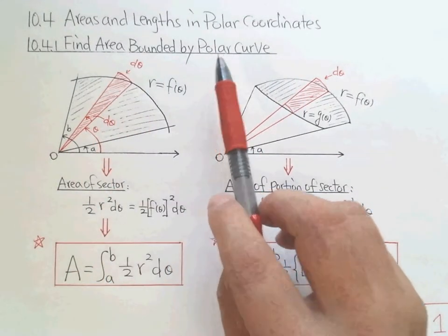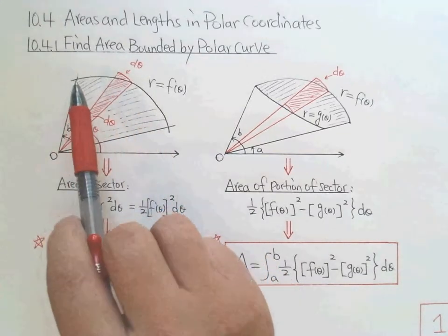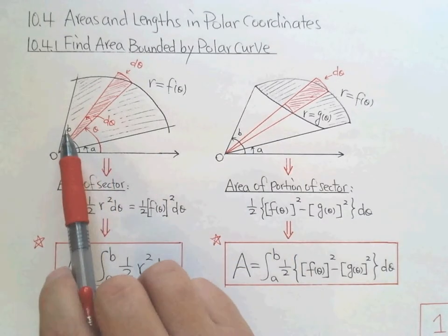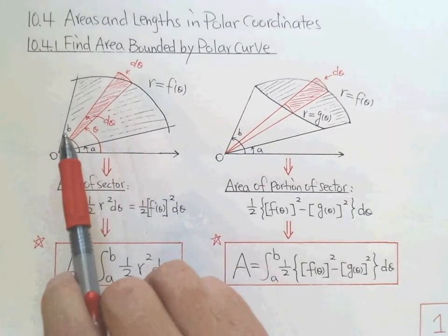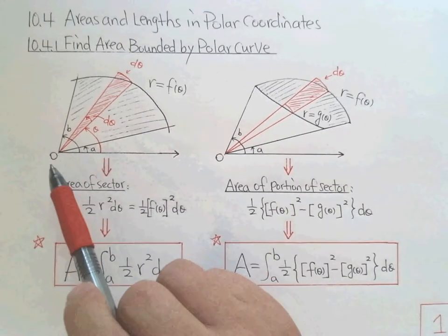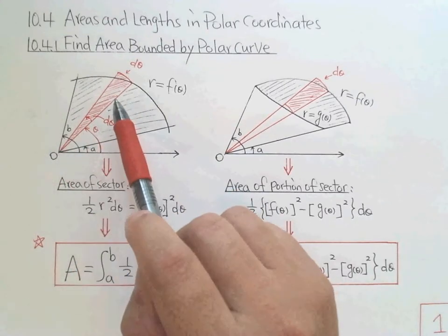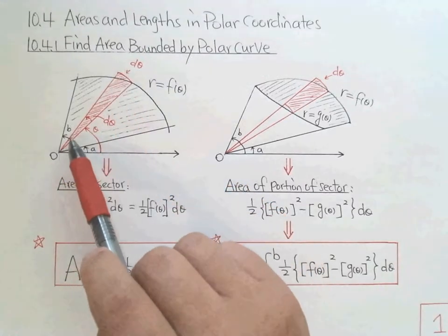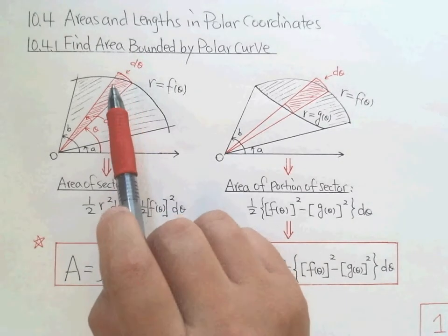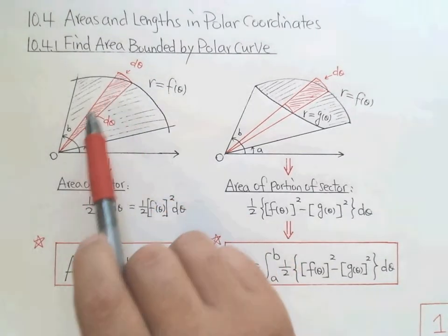We have two cases. We'll look at the first case. Here's the graph for the polar curve. We use r equals f(θ), with the angle θ from A to B, so it forms an area. Using the basic idea of integration, we cut the variable θ into pieces. From A to B, if we cut at θ with dθ as the increment, we form a small piece of area. We can approximate this small area by a sector — the red one I'm drawing here.